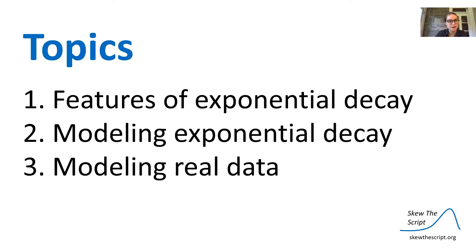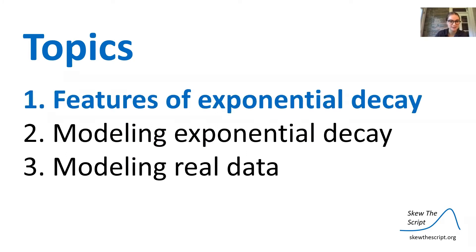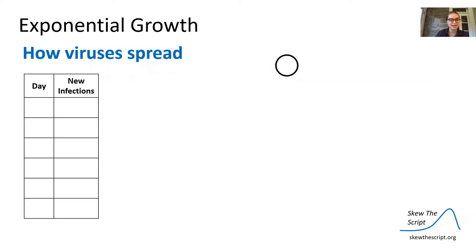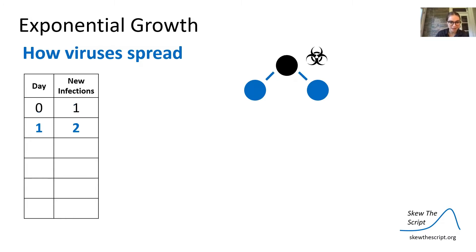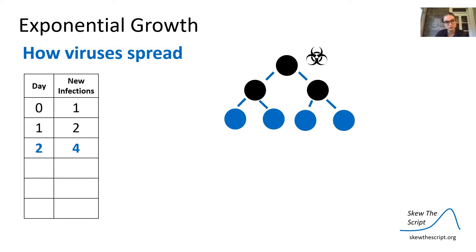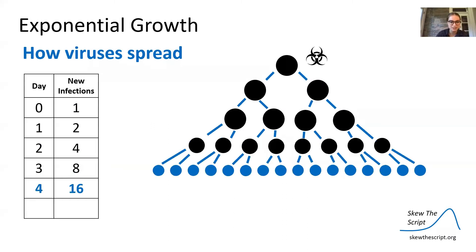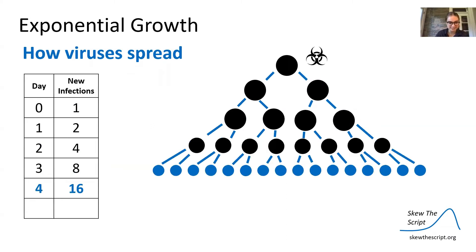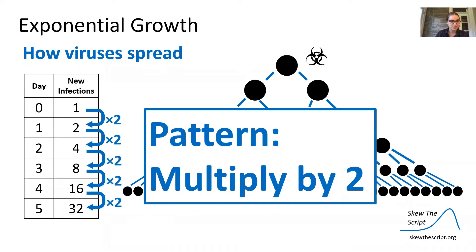The first topic we're going to talk about is features of exponential decay. Let's talk about exponential growth and how viruses spread. We have an infected individual who spreads their disease to two new people, so on day one we have two new infections. Those two people each spread it to two new people, so on day two we have four, day three eight, day four 16, and day five 32. The pattern here is we multiply by two — to get today's infection number, we multiply yesterday's number by two.